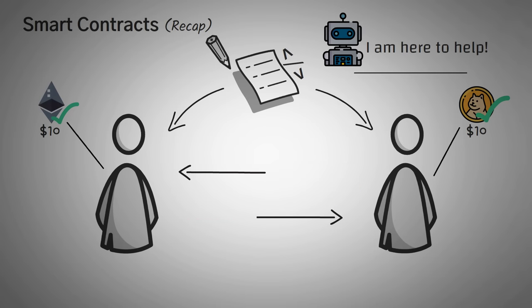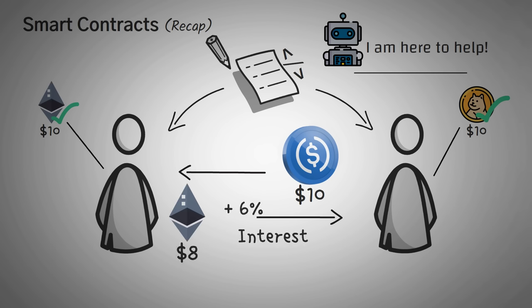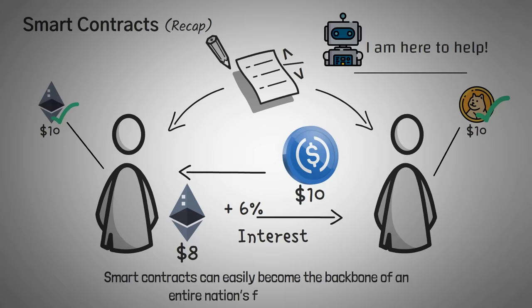Finally, financial smart contracts can be as complicated as if you give me $10 of USDC, I'll give you $8 of Ethereum, but you have to pay me 6% yearly interest. Now, just like addition eventually becomes the building blocks for multiplication and even exponents, these simple smart contracts can easily and quickly become the backbone of an entire nation's financial system.